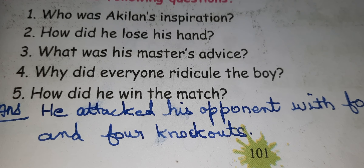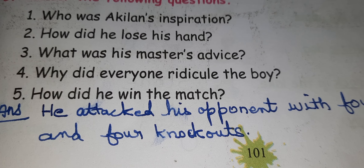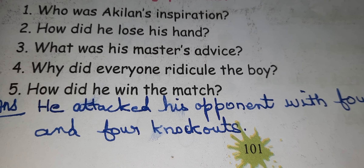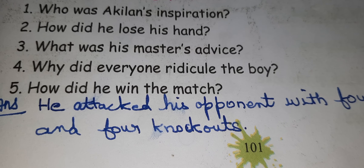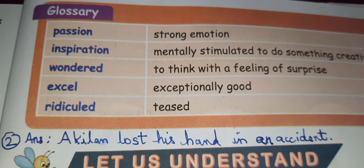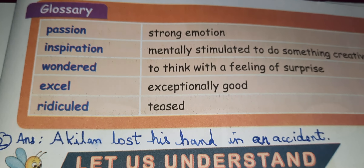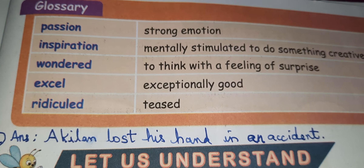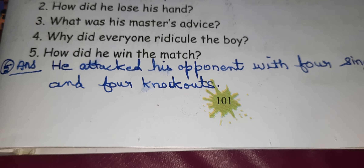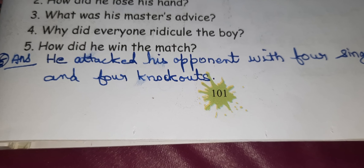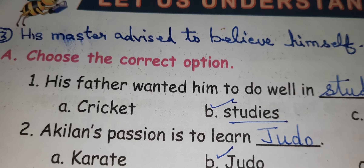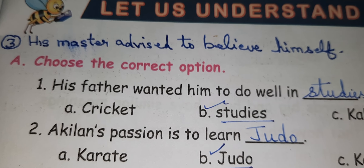Second question: How did he lose his hand? Agilan lost his hand in an accident. Third question: What was his master's advice? His master advised him to believe himself.